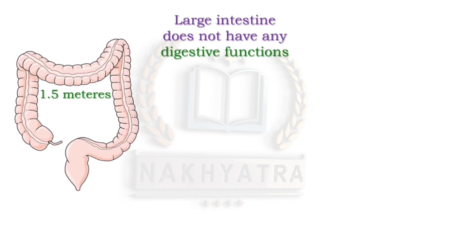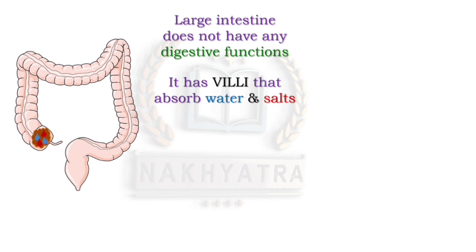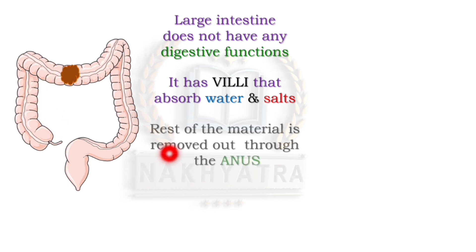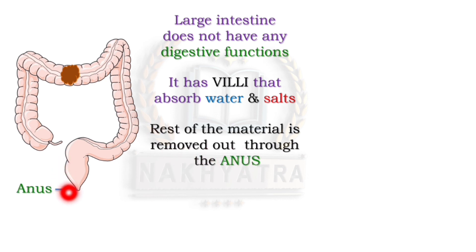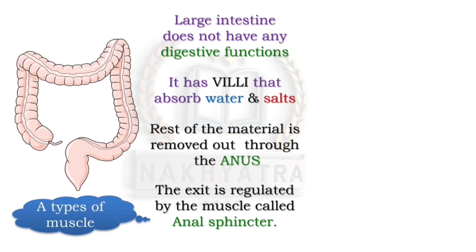The large intestine does not have any digestive functions and is about 1.5 meters long. Villi present here absorb water and salts from the unabsorbed material. The rest of the material is removed out through the anus, which is present at the end of the large intestine. The exit is regulated by a muscle called the anal sphincter.